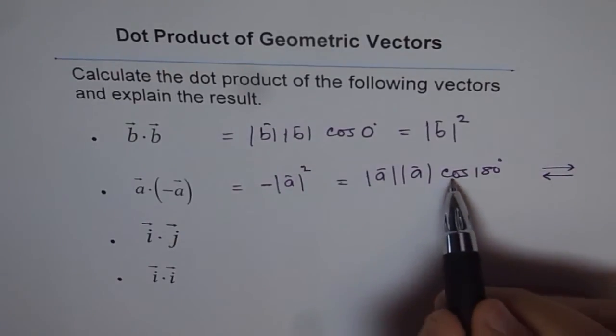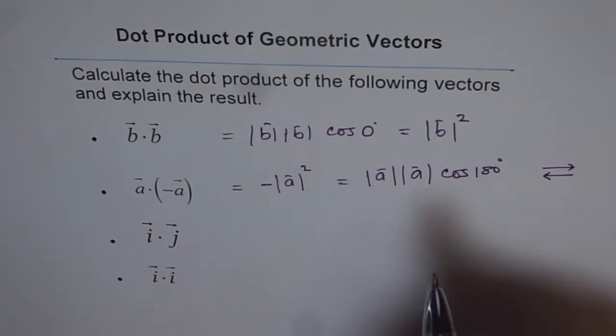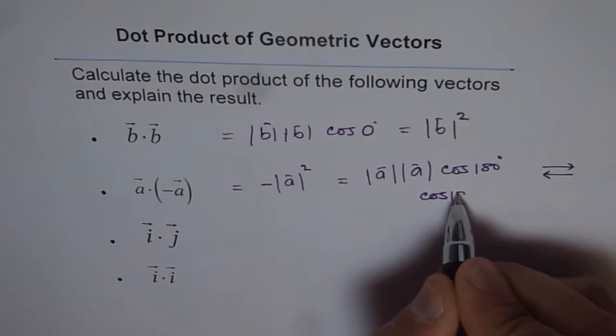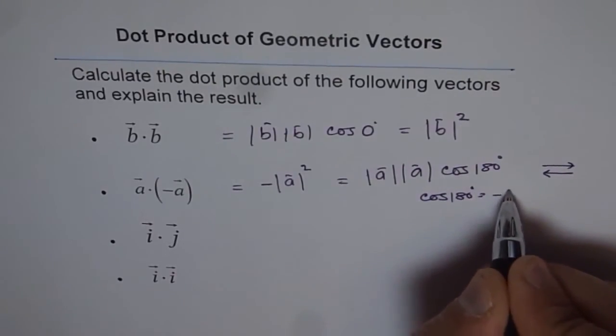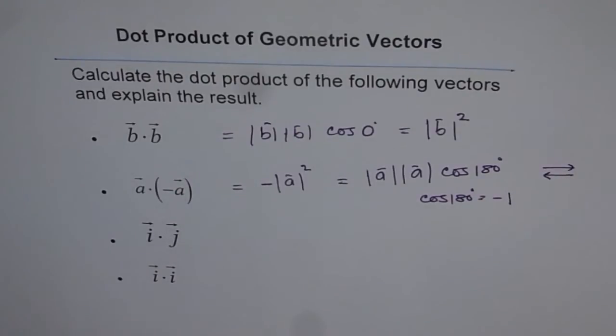Now you know cos of 180 degrees is minus 1. Cos of 180 degrees is also equals to minus 1, and therefore you get minus absolute value of a squared. So that is what you will get.